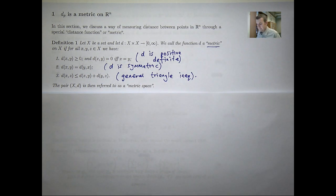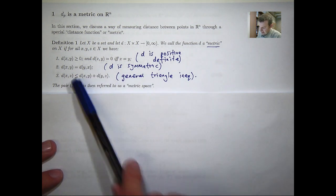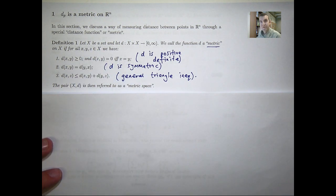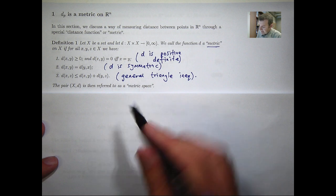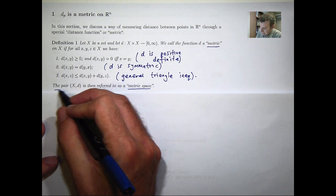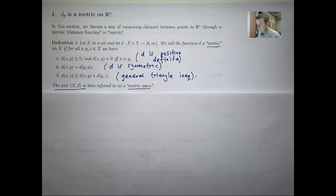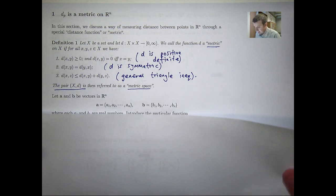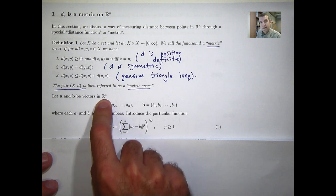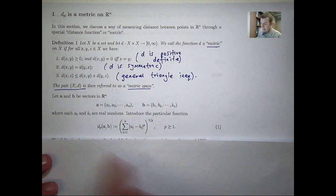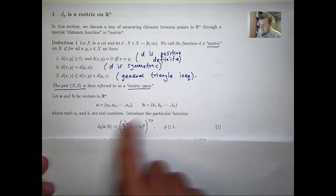If we have a function d that satisfies these three properties, then we call the pair — the set and the distance function — a metric space. In this presentation I'm going to talk about a way of measuring distance between points or vectors in R^n, so throughout the rest of the presentation the set X is just going to be R^n.